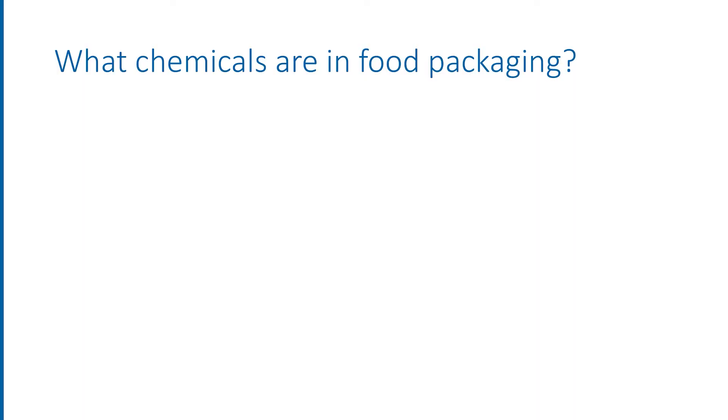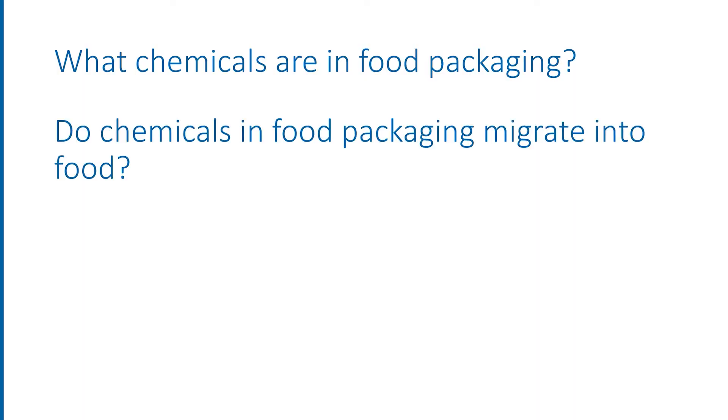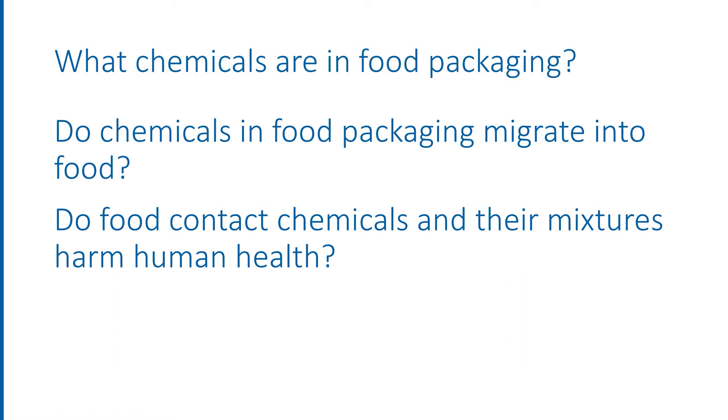Most chemicals migrate at individually low levels, but they migrate at the same time, meaning that a mixture of chemicals from the food packaging ends up in the food. How do we know what chemicals are in food packaging? How do we know if these chemicals migrate into food and beverages? And importantly, how do we know if these chemicals and mixtures of chemicals will harm human health?